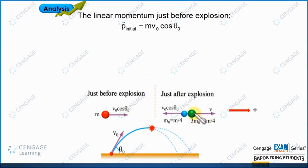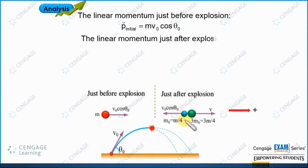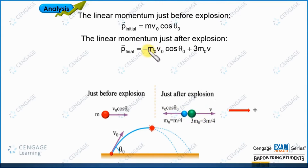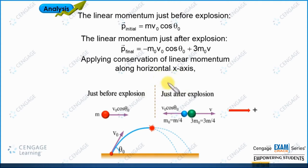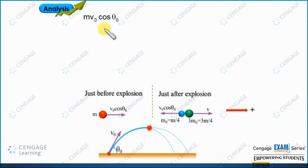Now let us write the linear momentum of the system of particles after explosion. We have two particles just after explosion. The total momentum after equals minus m naught multiplied by v naught cos theta naught plus 3 m naught multiplied by v, where v is unknown. We know m naught equals m by 4 and 3 m naught equals 3 m by 4. Now let us apply conservation of linear momentum — the momentum just before explosion equals the momentum just after explosion.